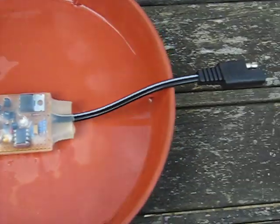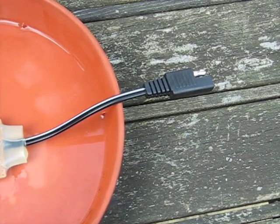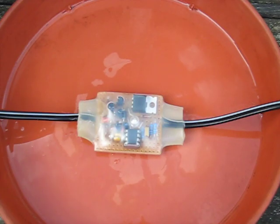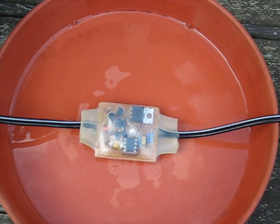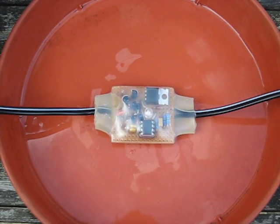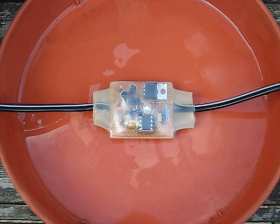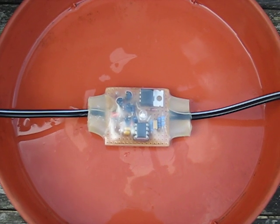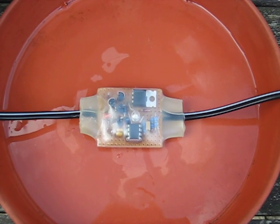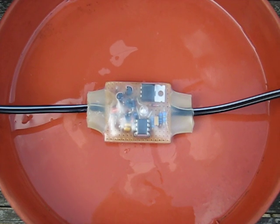At the other end is the solar panel, which isn't connected at the moment because I'm checking the encapsulated circuit. It's been put into a length of clear heat shrink sleeving and hot glued at each end.